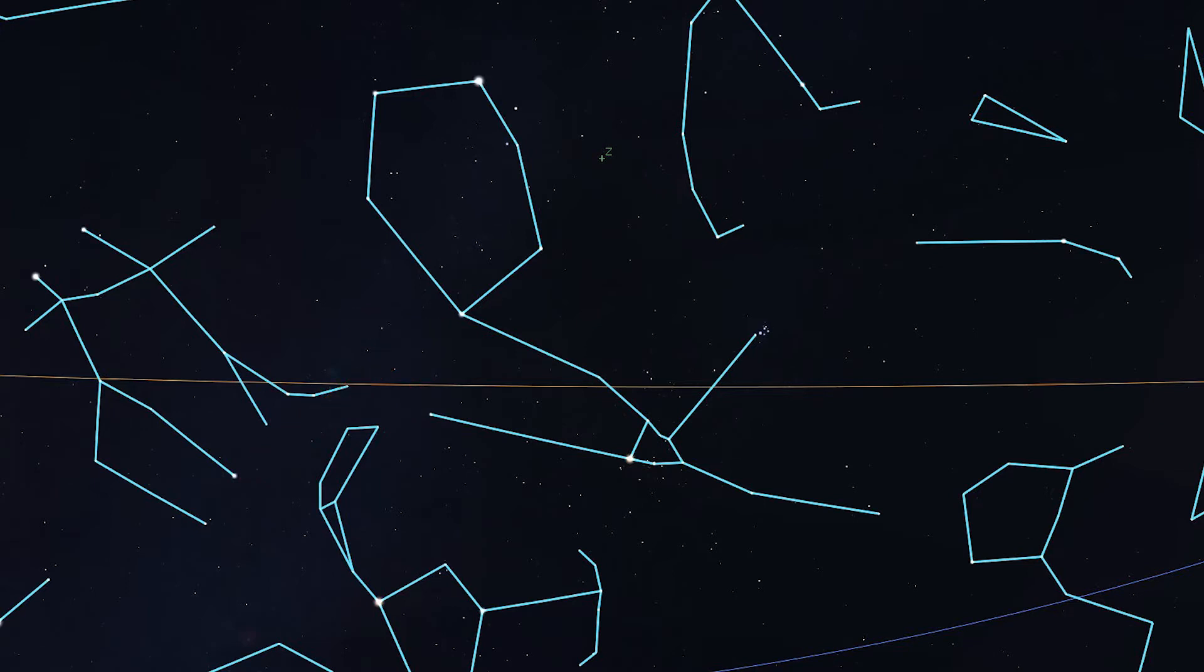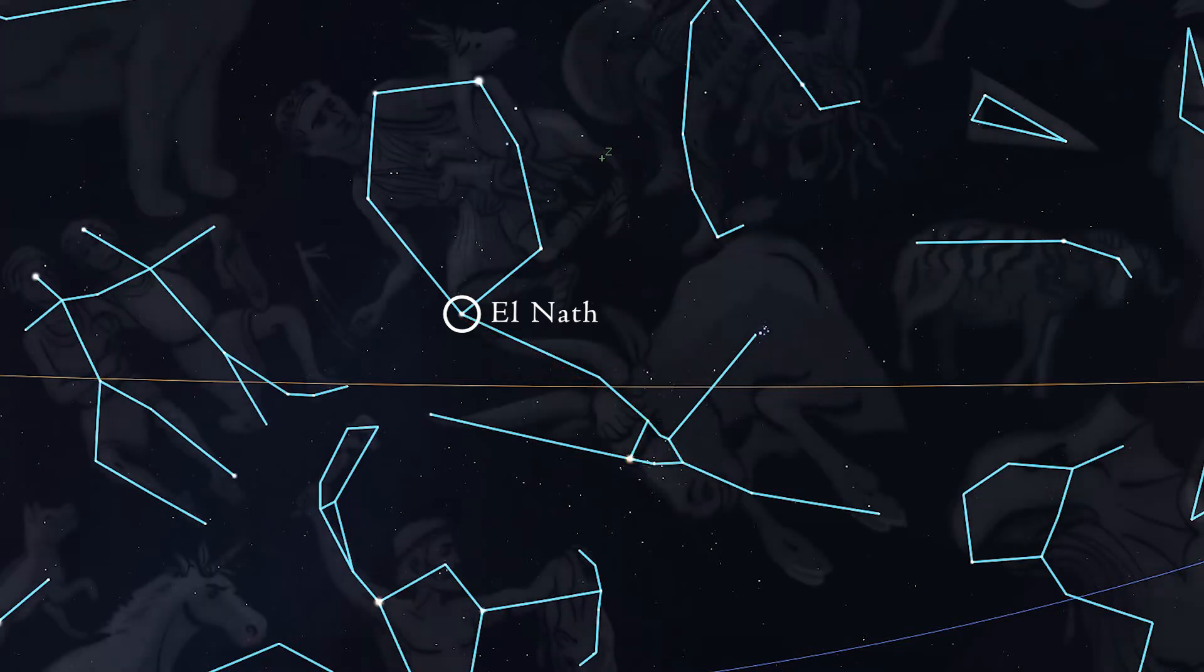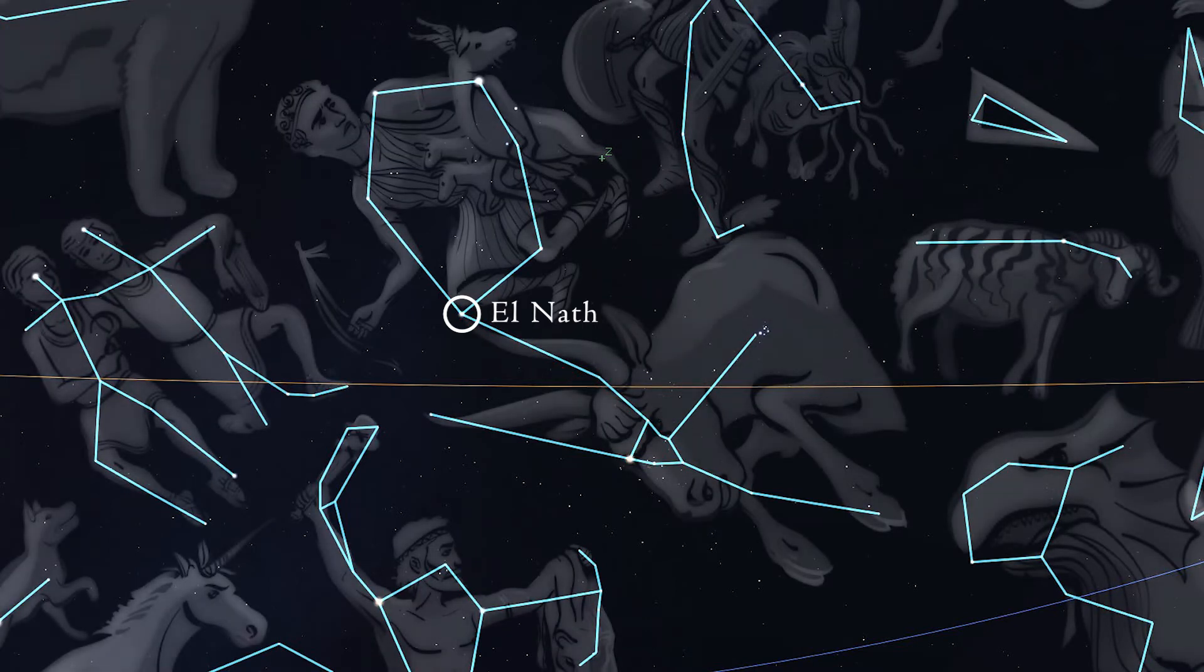Okay, find the V-shape that forms the head of Taurus, the bull, and follow his horns out to a star called Elnath, which is Arabic for the butting. Taurus is sort of head-butting Auriga, or maybe Auriga is riding Taurus?